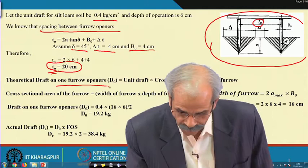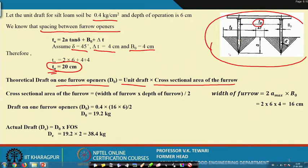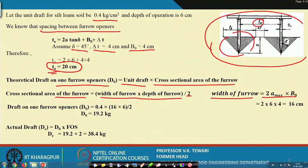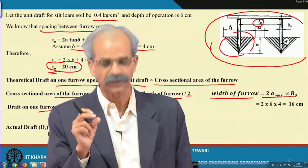The theoretical draft on one furrow opener equals the unit draft multiplied by the cross-sectional area of the furrow. The cross-sectional area is the width of the furrow multiplied by depth divided by 2, and the width of the furrow is twice the maximum b0. Using these — unit draft 0.4 kg/cm², depth 6 cm — the draft on one furrow opener d0 comes to 19.2 kg. This is the theoretical value.